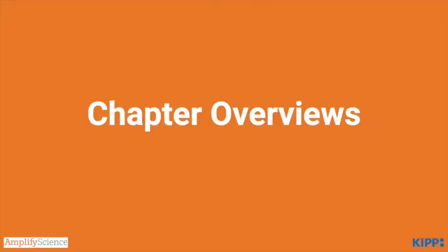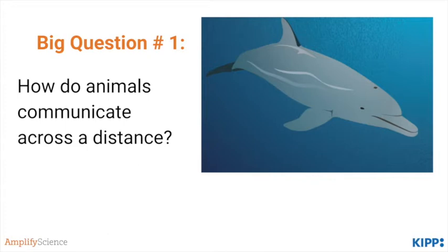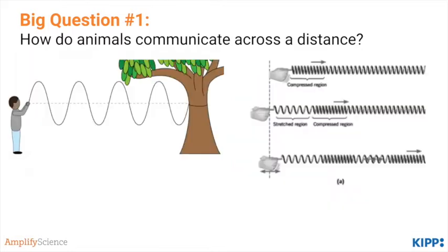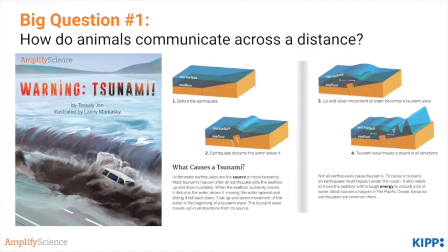On to the chapter overviews. Lesson one starts by introducing students to the anchor problem of dolphin communication. The big question is: how do animals communicate across a distance? Students start off by hearing different dolphin whistles and calls, and then learn about how sound travels as waves. They investigate two different models of waves — by flapping a rope up and down to create transverse waves, and by pushing a slinky back and forth to create longitudinal waves. Students then read the book Warning, Tsunami, about how tsunamis occur and some of the things humans do to help prevent natural disasters.